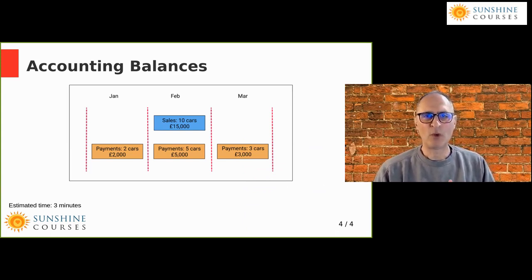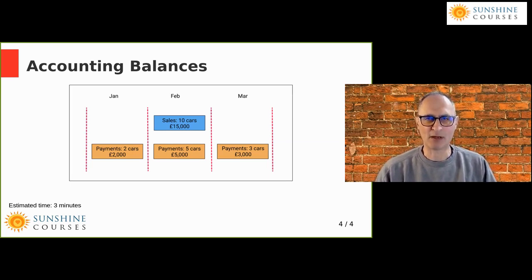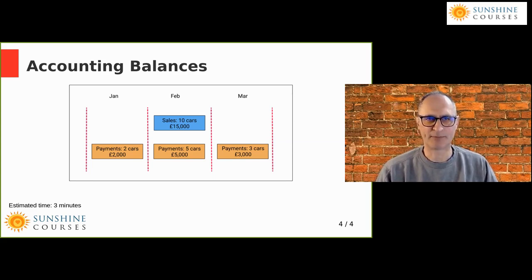In this example, we sell 10 cars all in February, and we sell each car for £1,500. So the total sales revenue is £15,000 over the three-month period, but all of that money comes in February. We've got a slightly different period as to when we buy the cars. Although we sell 10 cars in February, we actually bought two of those 10 cars in January. So if you look at January alone, it looks like we bought two cars.